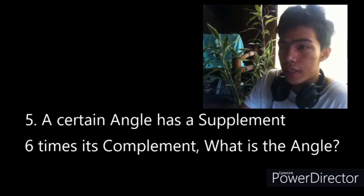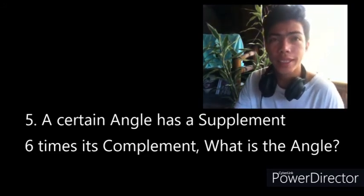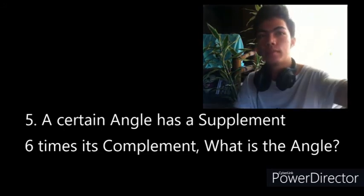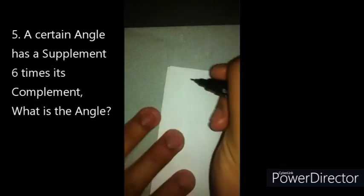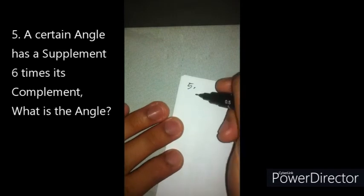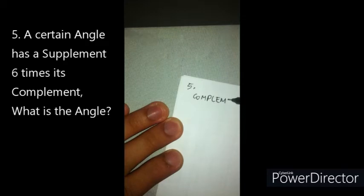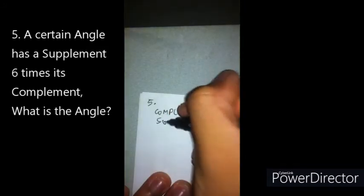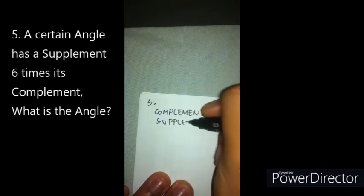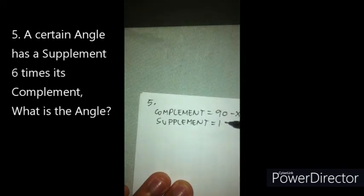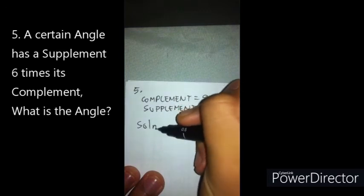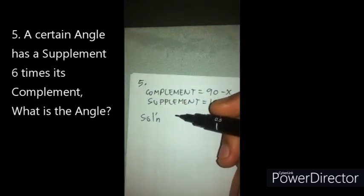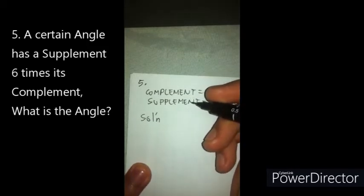For the fifth problem: a certain angle has a supplement six times its complement — what is the angle? For this problem, our complement is expressed as 90 minus x, and our supplement will be 180 minus x.